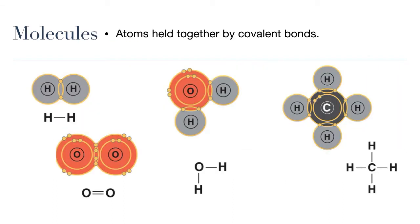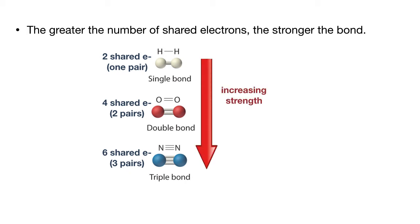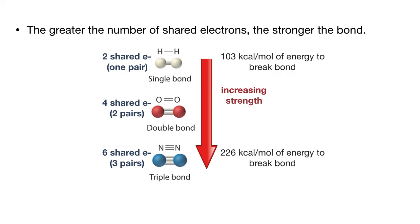Compounds held together by covalent bonds are called molecular compounds, or molecules. Sometimes there can be more than one pair of shared electrons, like oxygen. Each oxygen atom has six valence electrons and needs two more to be stable. So when two oxygen atoms form a covalent bond, they share two valence electrons each, forming what we call a double bond. Non-metal atoms can share up to three pairs of electrons and form triple bonds. The more electrons that are shared, the stronger the bond — single bonds are the weakest and easiest to break, and triple bonds are the strongest.